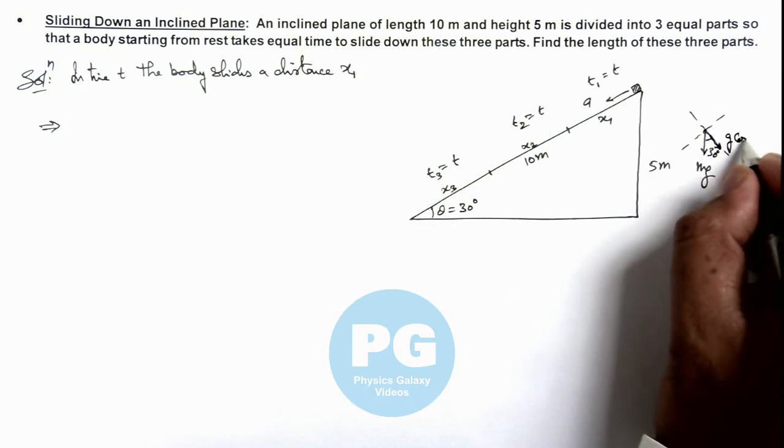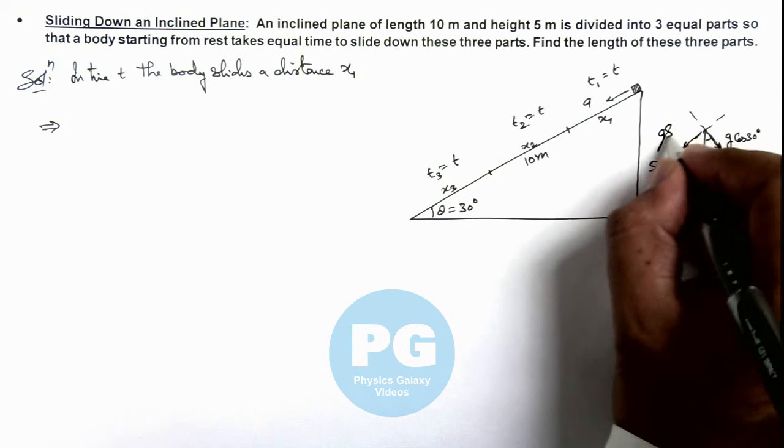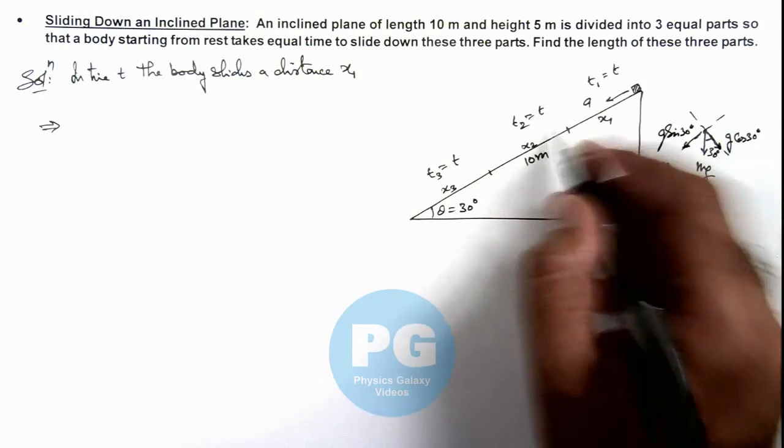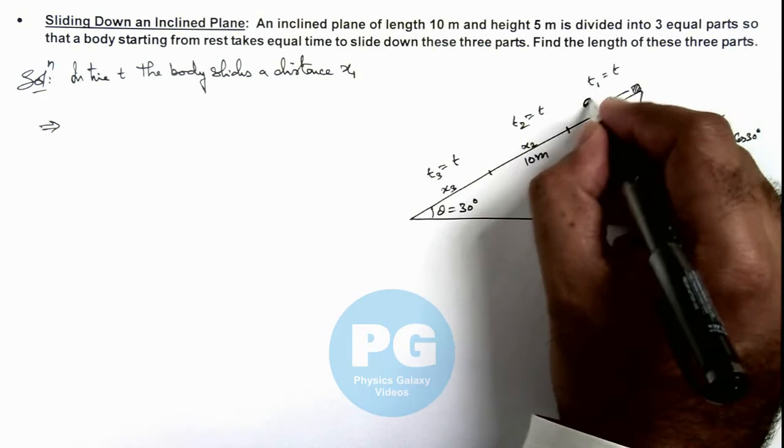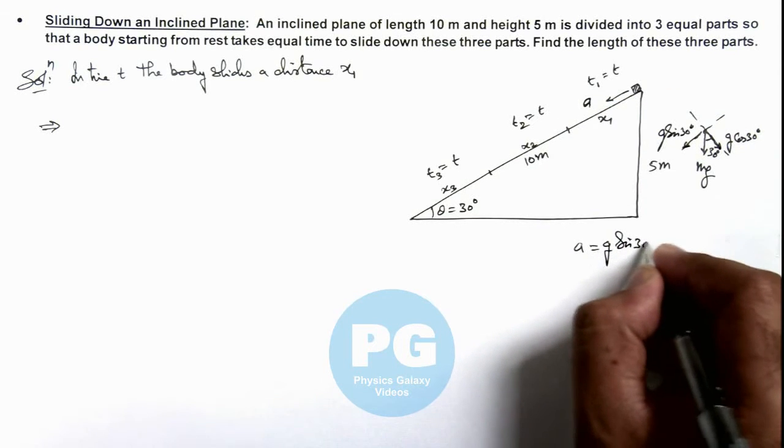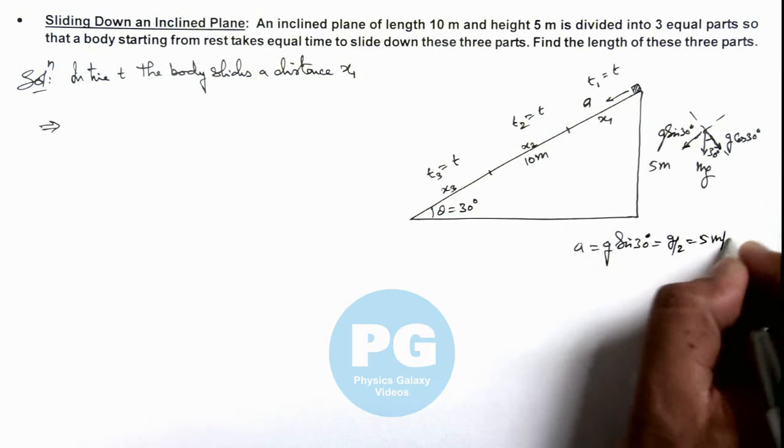g cos 30 degrees acceleration in normal direction and g sin 30 degrees acceleration in the direction along the plane. So here we can write acceleration of this body along the incline as g sin 30 degrees, that can be taken as g by 2, which is 5 meters per second squared.